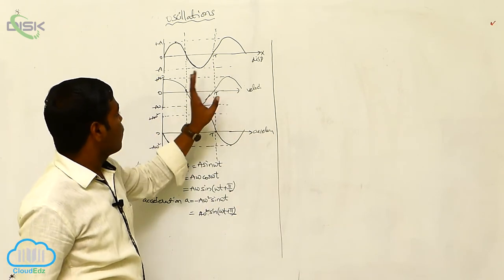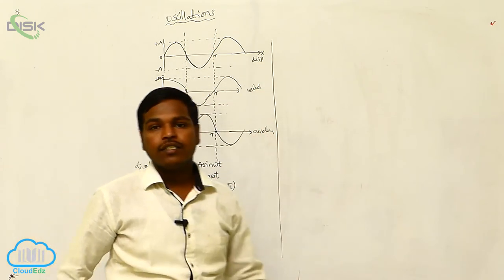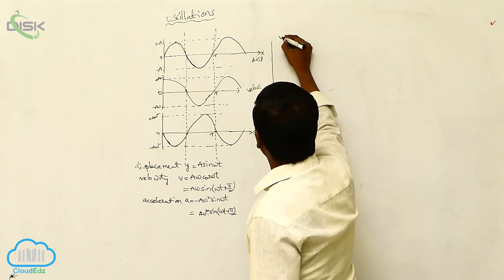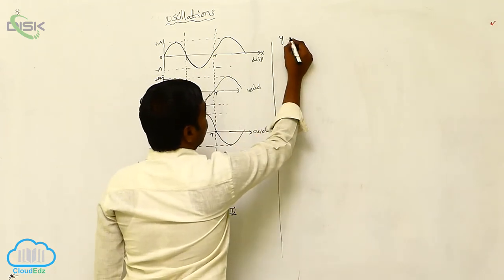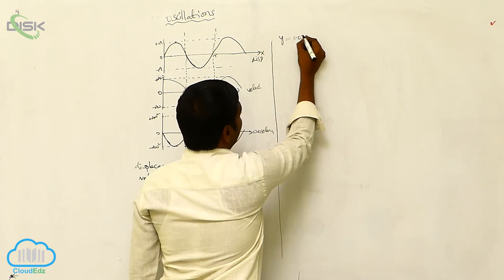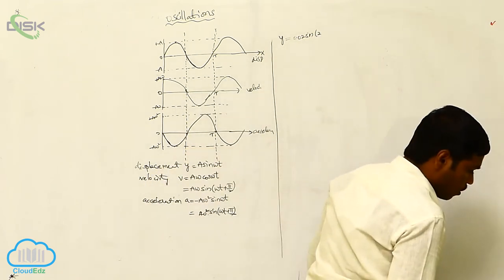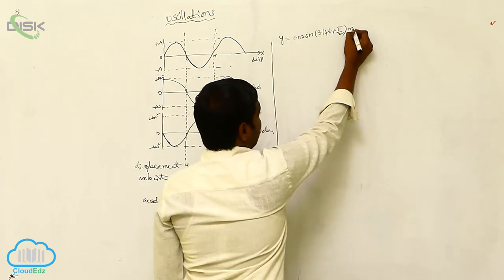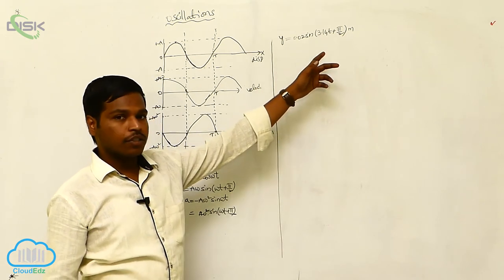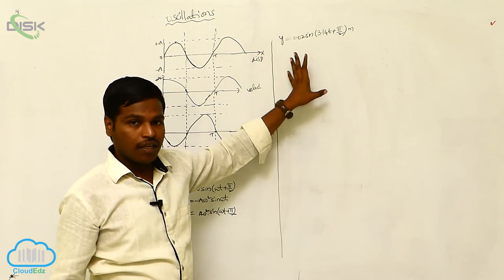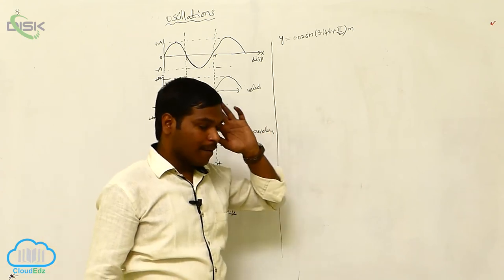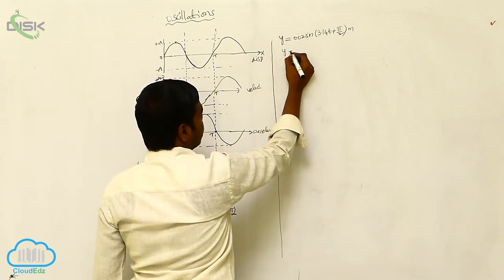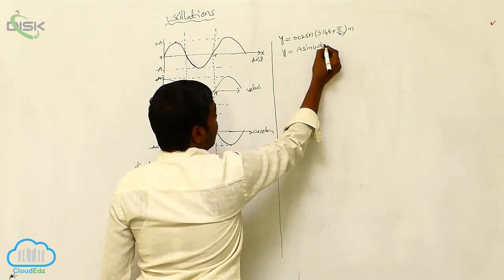These are the variations of displacement, velocity and acceleration in simple harmonic motion. Now for example, if a particle is executing simple harmonic motion, the displacement is given by y = 0.02·sin(3.14t + pi/2). We have to calculate the displacement, velocity, acceleration, amplitude, phase angle, and these all values. To calculate these, we first compare this equation with y = a·sin(omega·t + phi).